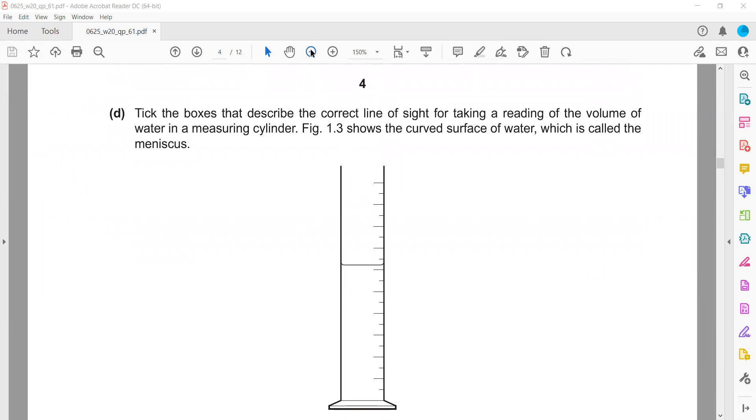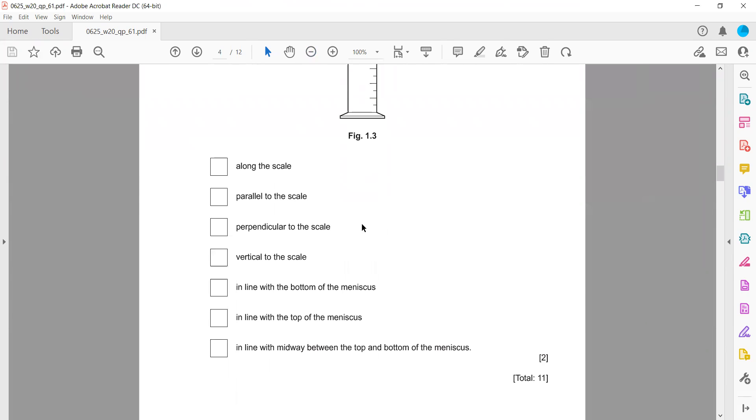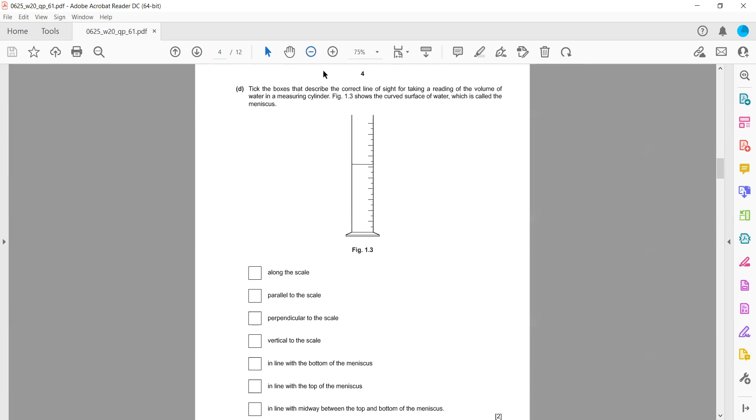Tick the box that describes the correct line of sight for taking the reading of the volume of water in the measuring cylinder. Look perpendicular to the scale – that's one point. We should always use the bottom meniscus. Whenever we are reading the scale, we should look perpendicular and be in line with the bottom meniscus.